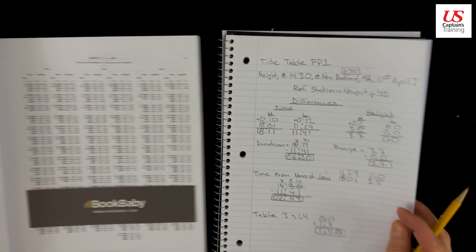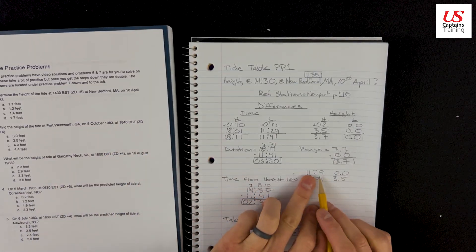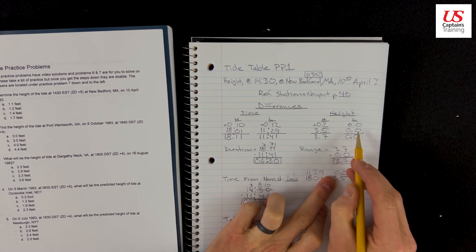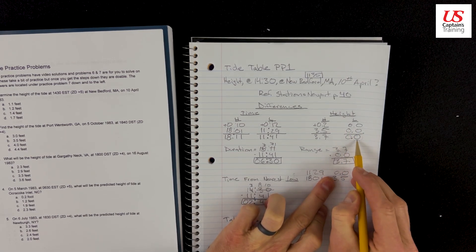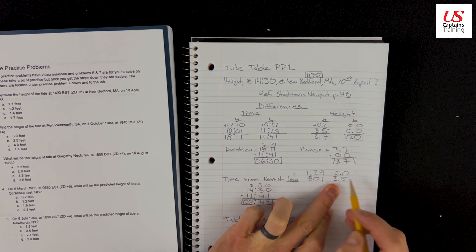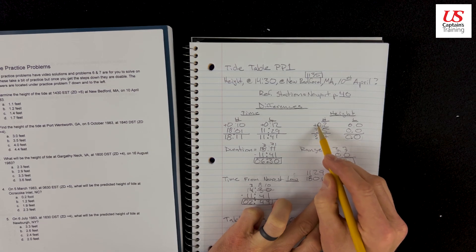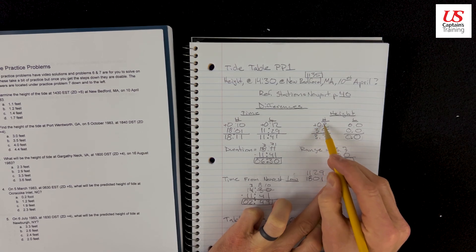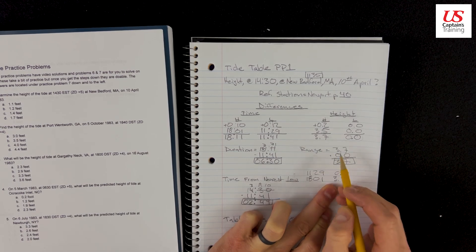So we take our 11:29, it's a low, and we put it here, and we correct the low tide. It's still all zeros. And then our 3.5 is the height of the high. We put it here and consider the plus 0.2 feet. From 3.5 is 3.7. That's the height of the high at New Bedford, Mass.